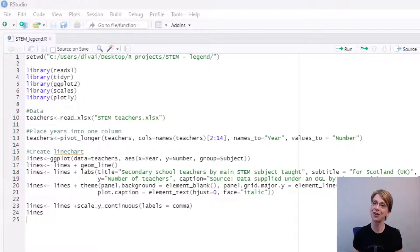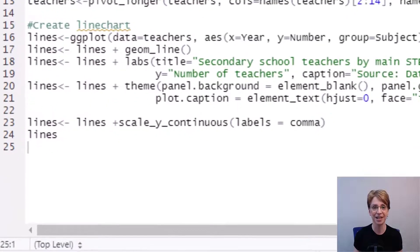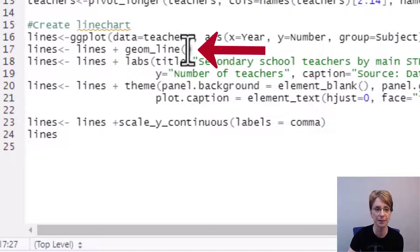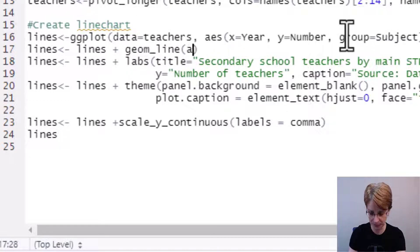In ggplot2 for the legend to appear we are required to use AES which relates to aesthetic mapping. So to do this it's quite straightforward all I do is in my code inside geom_line I put AES brackets and then inside AES for the legend to appear I now need to either use fill, colour, alpha or shape and in this scenario I'm going to use colour to colour the lines.